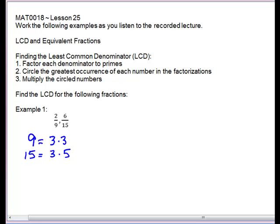The 3's are occurring the most here, and the 5 is here, and we want to multiply those, 3 times 3 times 5. So this gives us 9 times 5 is 45. That is our least common denominator for these two denominators.